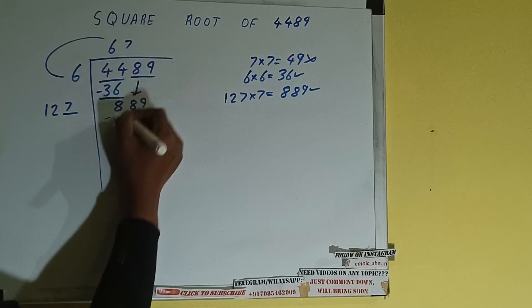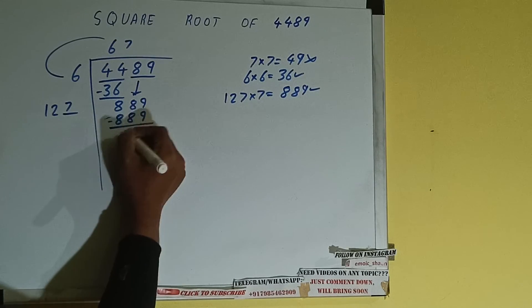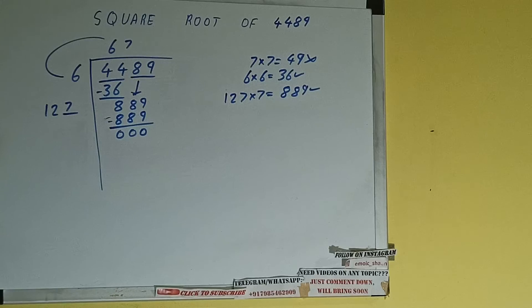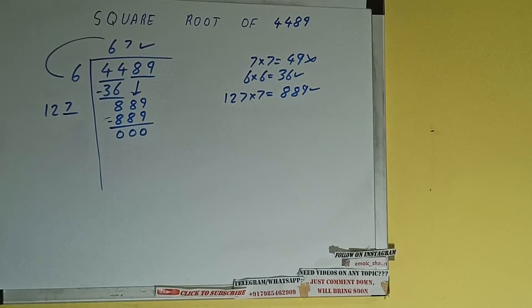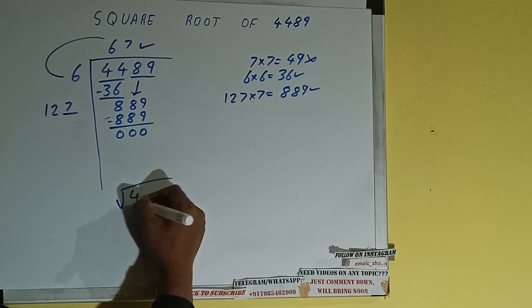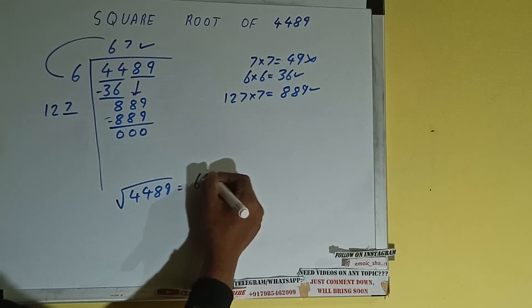So 7 here and 7 here, 889, subtract, 0 will be left. Once we get 0 whatever is in the quotient will be the answer that is 67. So square root of 4489 will be 67.